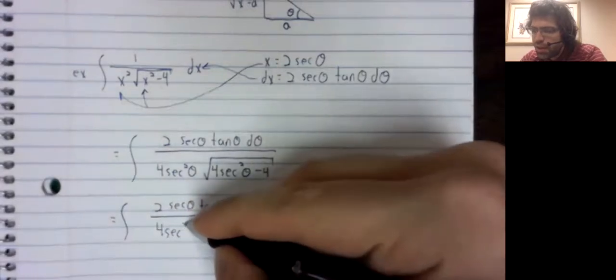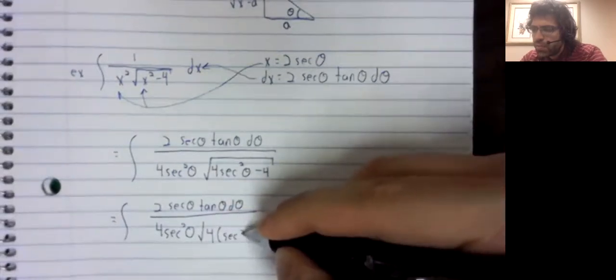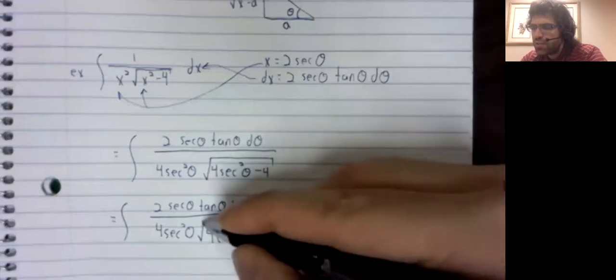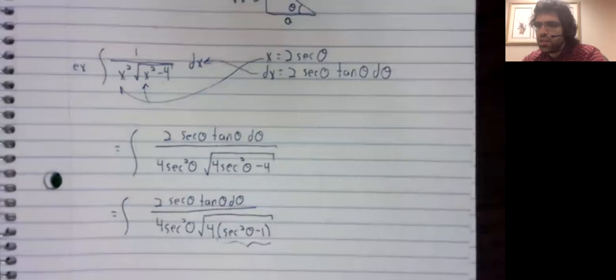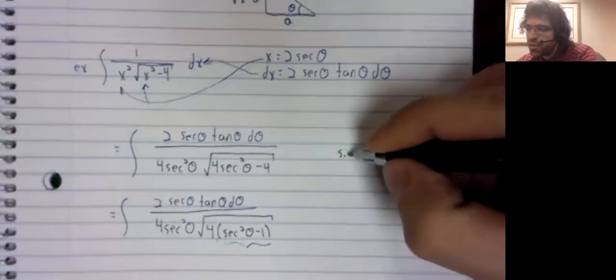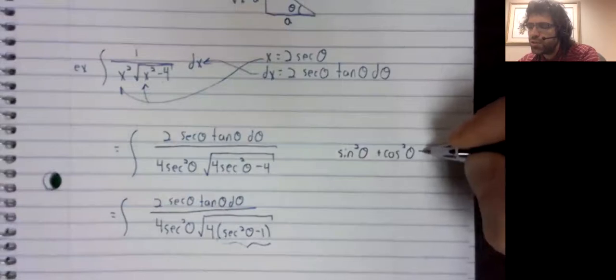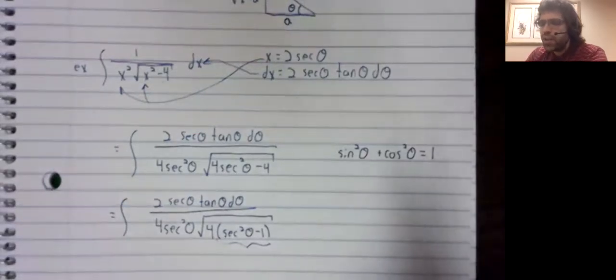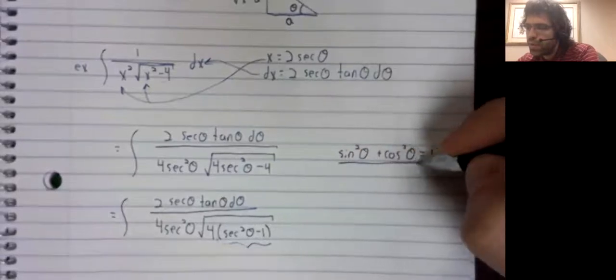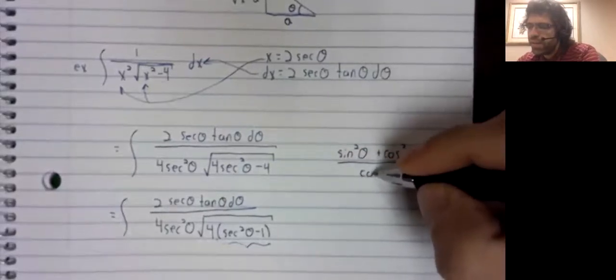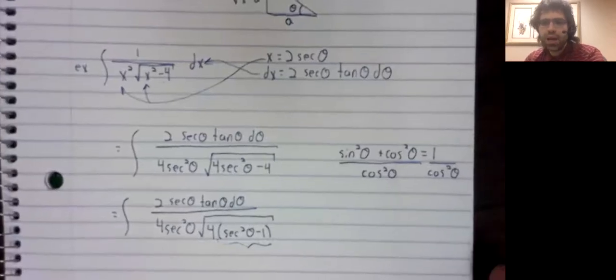Now, the Pythagorean identity, as we know it, does not have a secant in it. Nevertheless, we are going to use the identity to simplify this. Here's how it's going to work. The sine squared plus the cosine squared equals one. Let's turn this one into a secant squared by dividing both sides of this equality by the cosine squared.